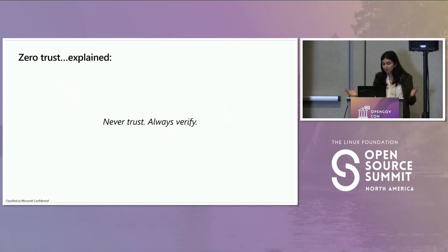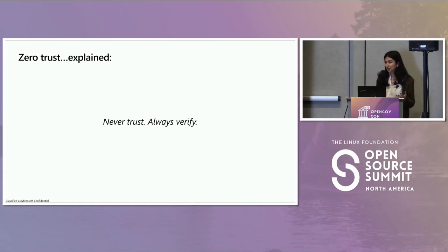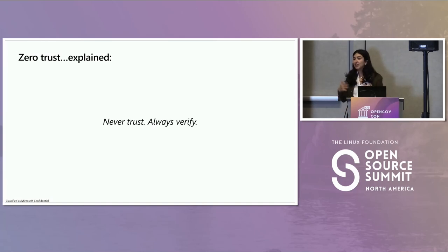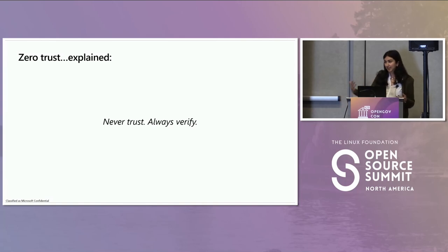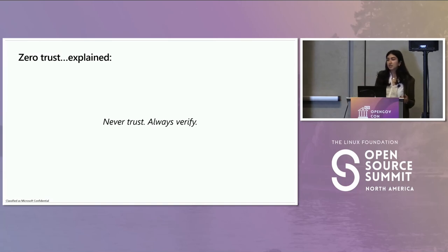A simplified version of Zero Trust is that we are never trusting anyone and are always verifying. This is exhausting work — if we will never trust anyone or anything at any point, it's work we're doing every second of every day. It's not sufficient to have an army of humans looking at your environment telling you who to trust. We need to couple that with security that is intelligent.